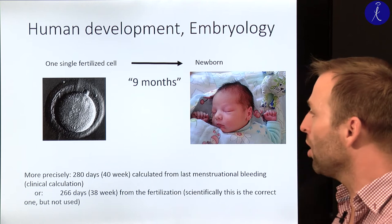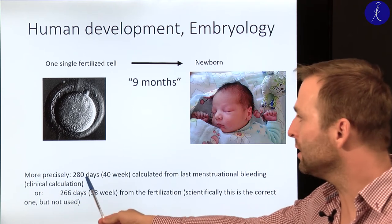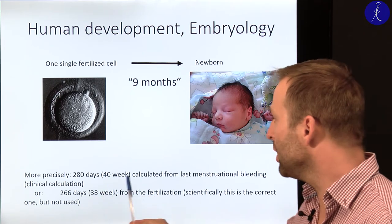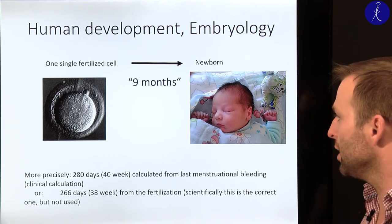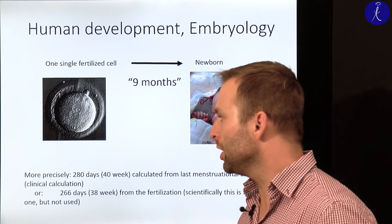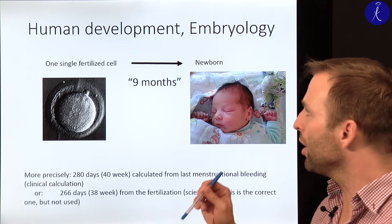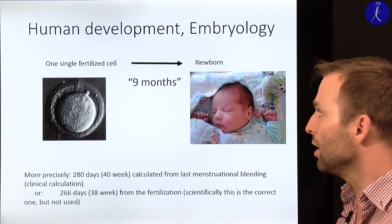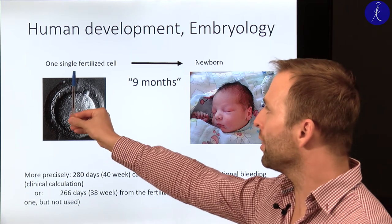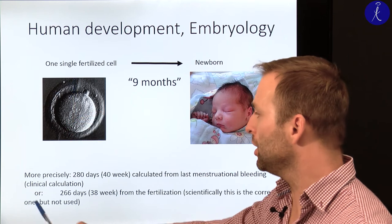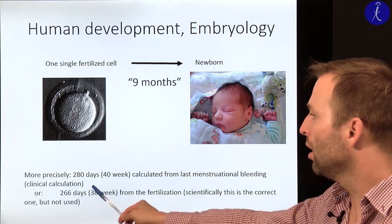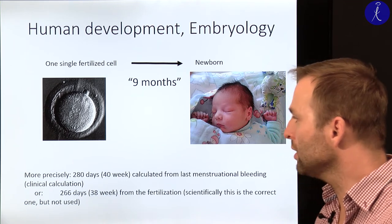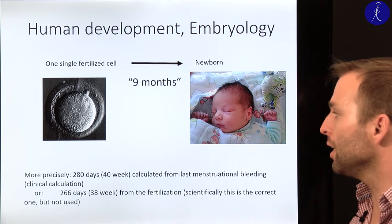So what's with these nine months? It's more precisely 280 days, which equals 40 weeks, calculated from the last menstrual bleeding. This is the clinical calculation, which does not take into account the point of fertilization. If we consider the exact time of fertilization, the pregnancy only lasts 266 days, which equals 38 weeks — two weeks less than the clinical calculation.